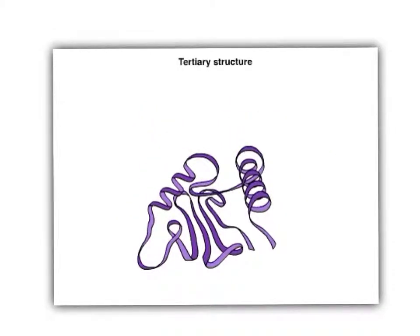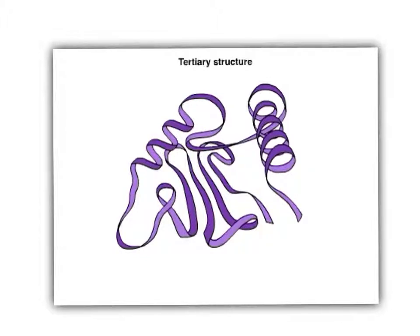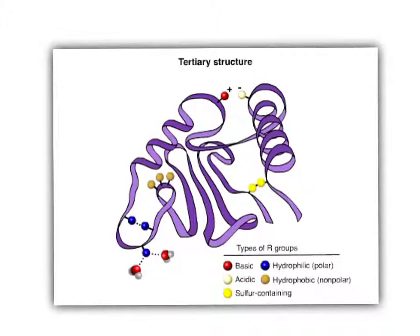Superimposed on primary and secondary structure is tertiary structure — irregular loops and folds giving the protein its overall three-dimensional shape. Acidic and basic R groups ionize, and positively and negatively charged groups may form ionic bonds. So if one region has a positive charge and another a negative charge, they attract each other, altering the shape of that part of the protein.